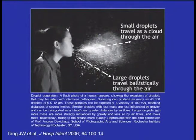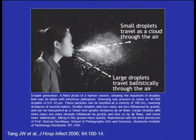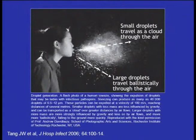Large droplets travel about three to six feet and spread common viral respiratory infections, Neisseria meningitidis, and most upper respiratory colonizers. As those droplets evaporate, a small percentage become droplet nuclei — small droplets under five microns — that stay aloft and travel long distances. Three diseases are primarily spread by the airborne route: tuberculosis, chicken pox, and measles. Sometimes influenza and some bioterrorism agents can be opportunistic airborne pathogens depending on humidity and temperature.